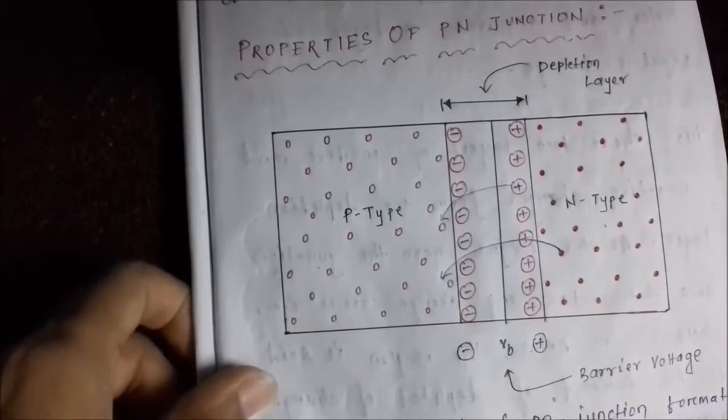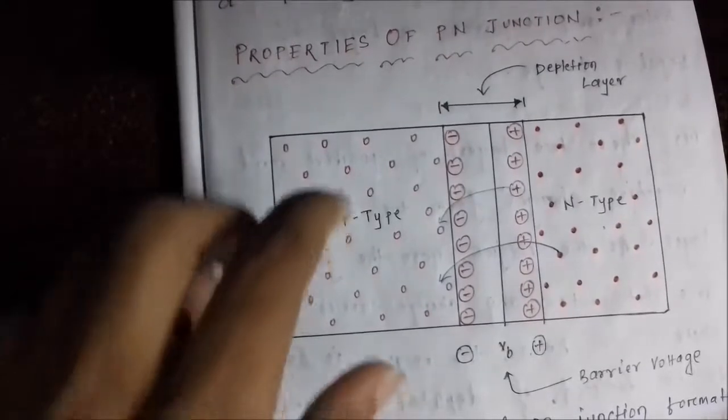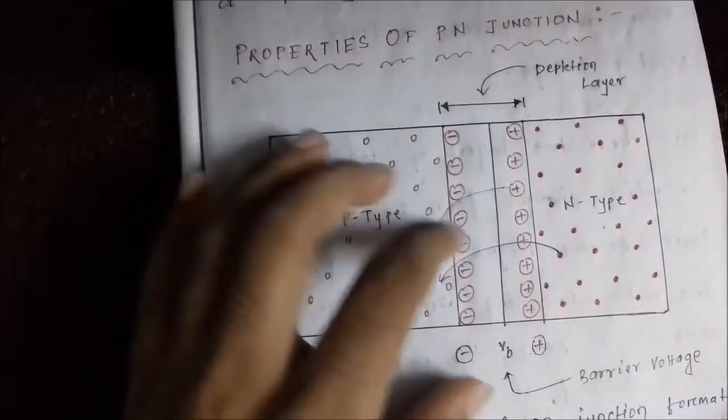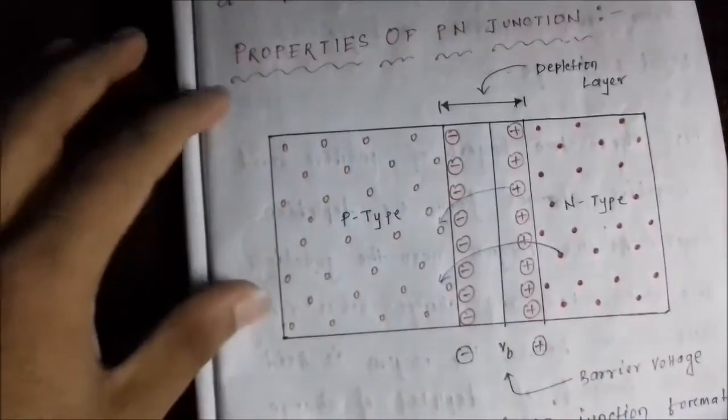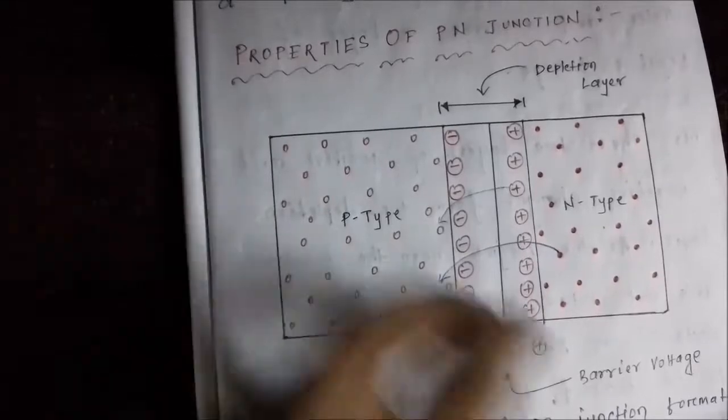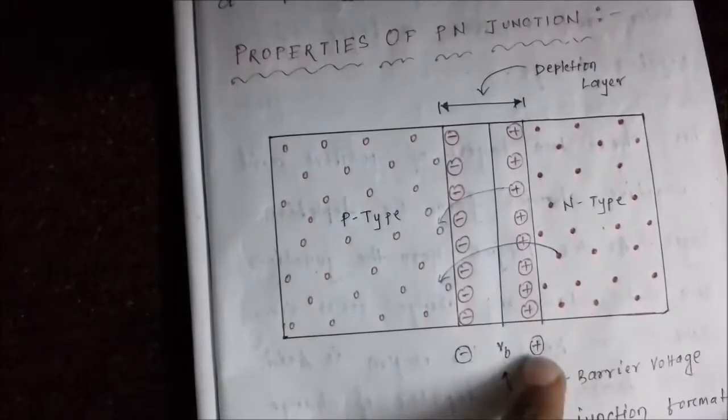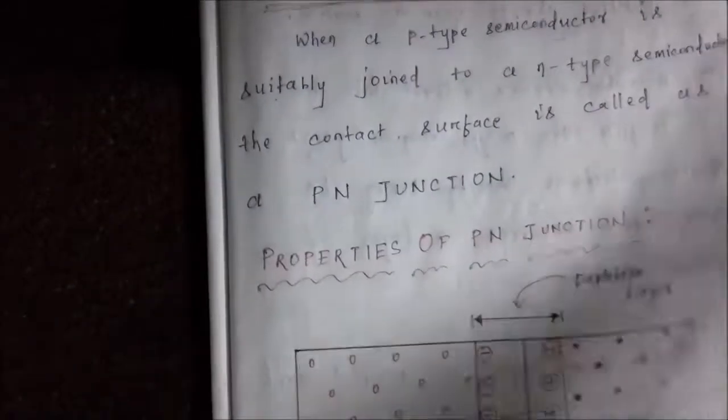This is the width of the depletion layer. An electric potential is generated from positive to negative direction.